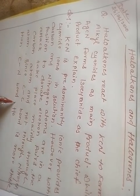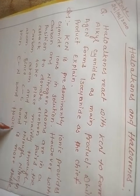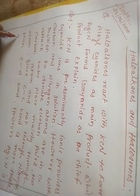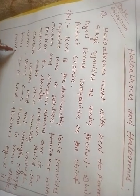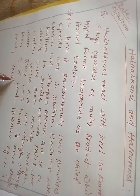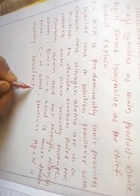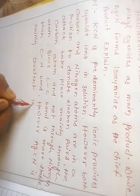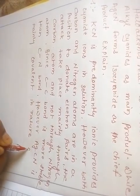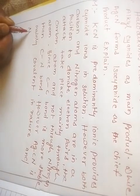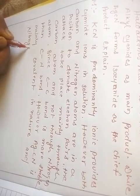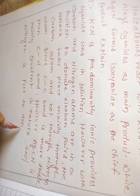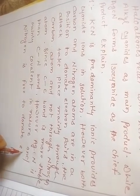However, AgCN is mainly covalent in nature. Because of its covalent nature, nitrogen is free to donate the electron pair, forming isocyanide as the main product.